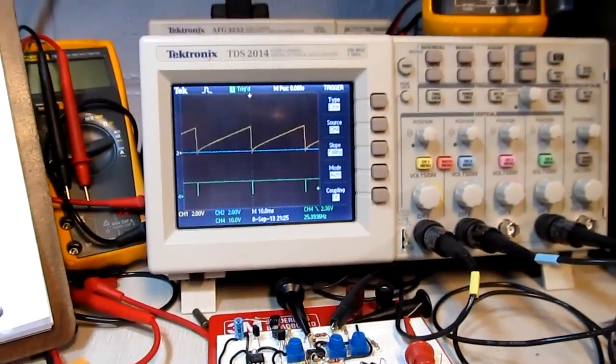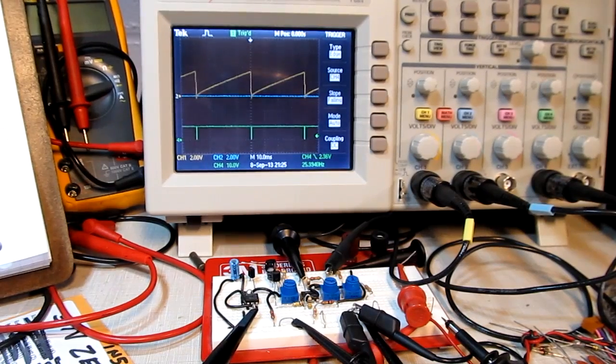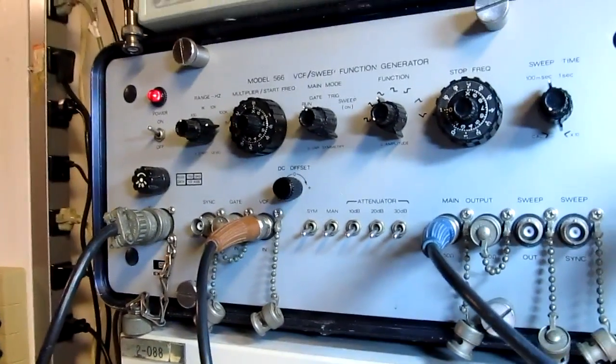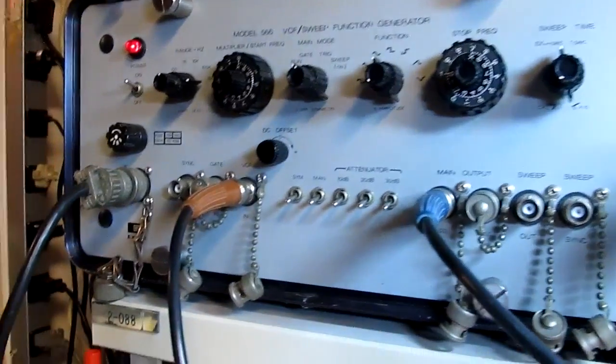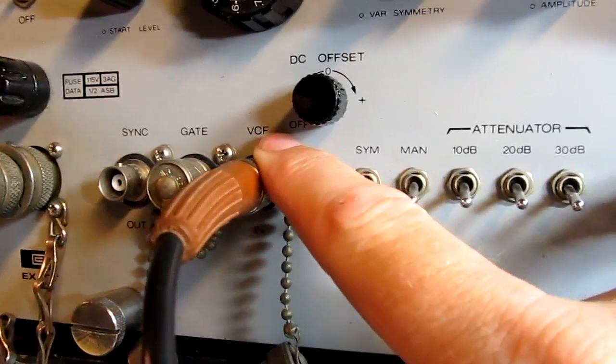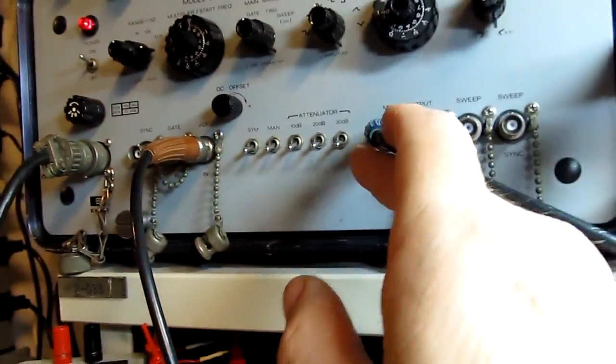So the way we'd use this to maybe create a sweeping signal out of a function generator is actually pretty interesting. So we'll take a look at that hookup. So I've got this old function generator here. You've seen me do a video on this one in the past. This one happens to have this voltage controlled frequency input. And the voltage that's applied to there will determine the frequency of the output. So I've got that hooked into a power supply here right now.